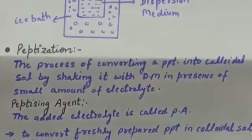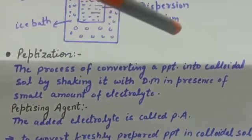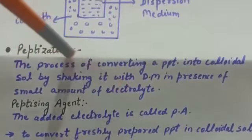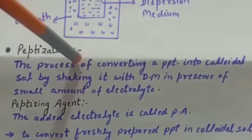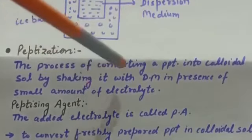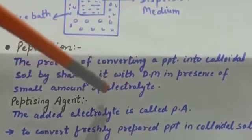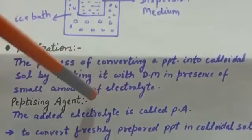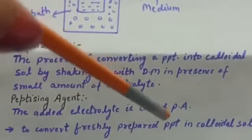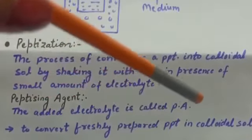The next method for preparation of colloids is peptization. Peptization is the process of converting a precipitate into colloidal solution by shaking it with dispersion medium in the presence of a small amount of electrolyte. The added electrolyte is called the peptizing agent. This method is used to convert only freshly prepared precipitate into colloidal solution.